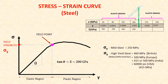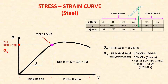The yield strength of high yield strength rebar is 460 MPa in British standard, 500 MPa in Europe, 415 or 500 MPa in India, and 60,000 psi in the USA — which is equivalent to 415 MPa.